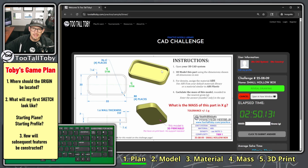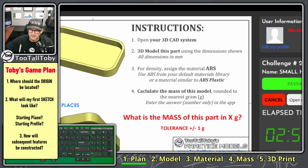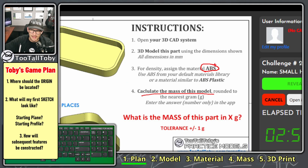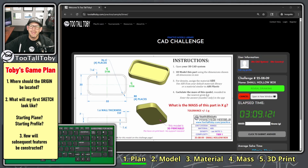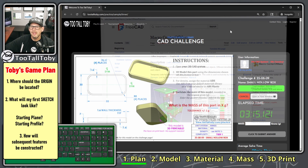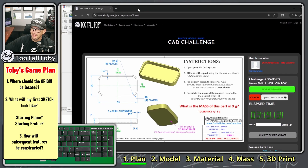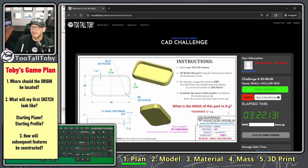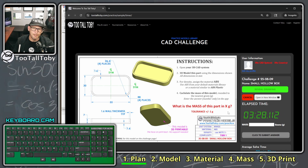After getting the geometry correct, we assign the correct material because mass equals material density times volume — we need to find ABS. Then we'll calculate the mass using that macro linked in the description. Now that we've got our game plan, let's move to the modeling. I know I spent about three minutes on the plan, but taking a moment to think through your strategy can really save a lot of time when you actually get into the modeling.